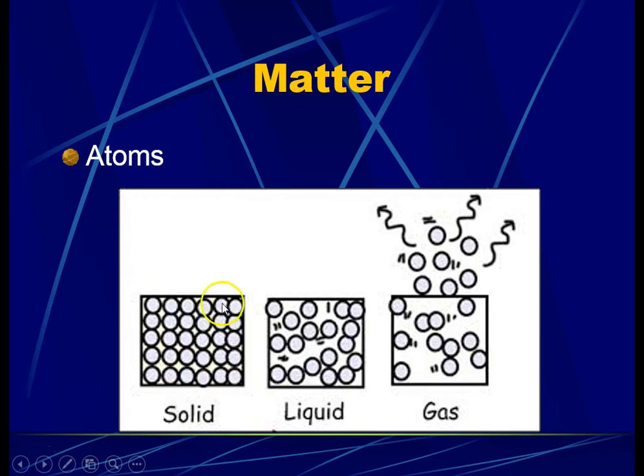You have also learned that objects around us exist in three states: solid, liquid, and gas. All these objects, whether they are in solid, liquid, or gas states, are made up of atoms or matter. So let's have a look at these diagrams.